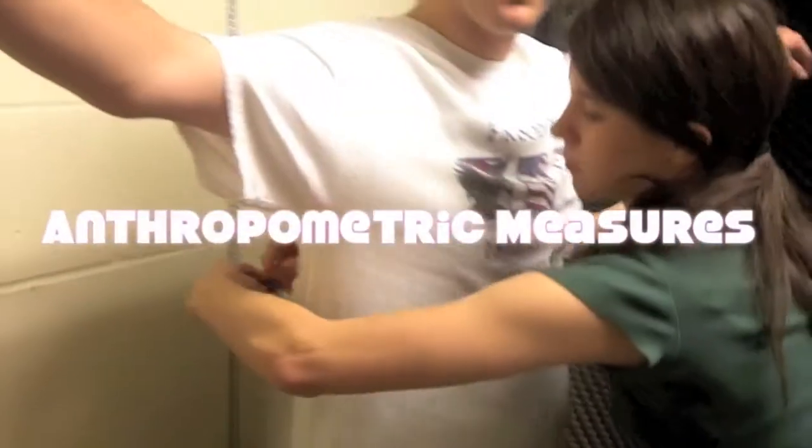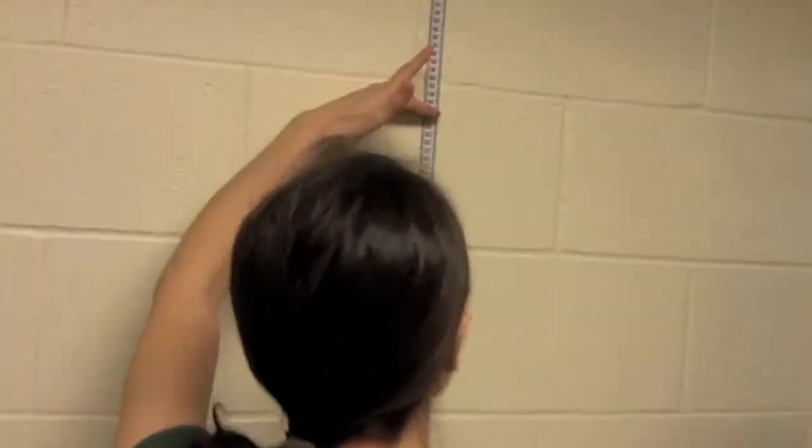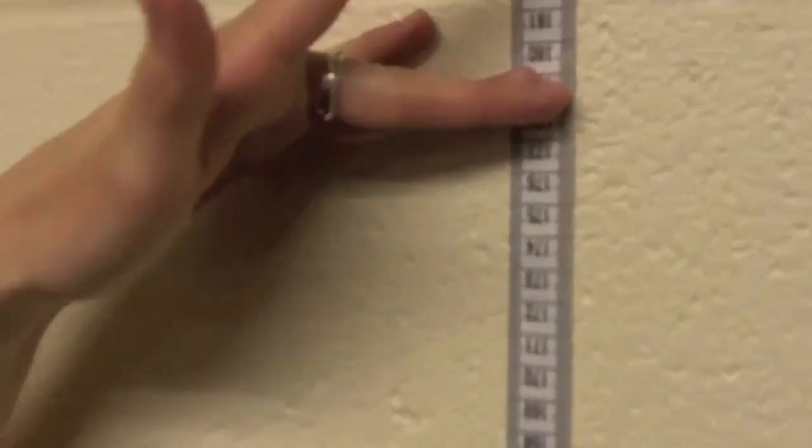Anthropometric measures: How to measure height. Ask the participant to remove their socks and shoes. Instruct them to stand straight against the wall. Record height as marked on the measuring tape. A stadiometer can also be used to measure the participant's height.